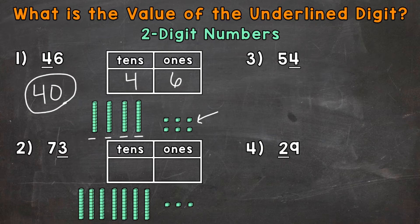Let's move on to number 2 where we have 73. Let's write 73 in our place value chart. So 7, 3. Now in number 2, we're taking a look at the 3 in the ones place. That's the digit that's underlined.